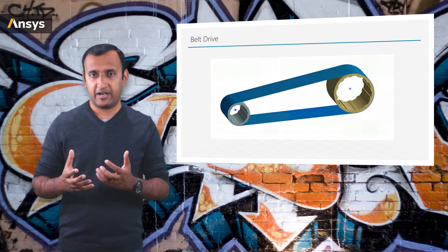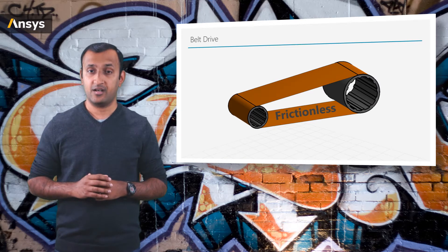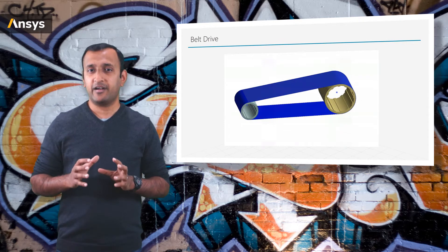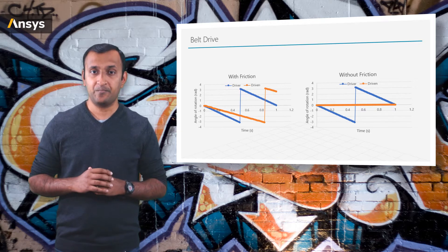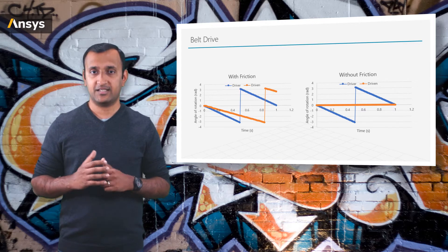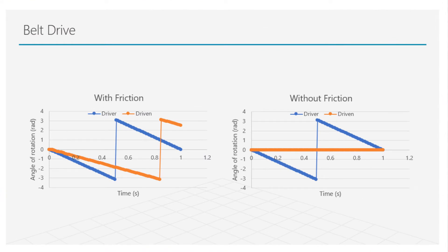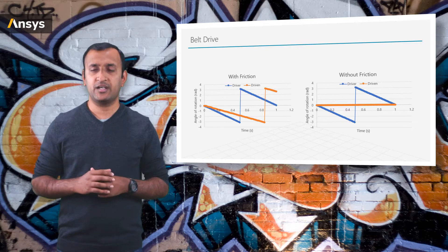Now, suppose we lubricate the shaft surfaces more than we should and end up with a nearly frictionless interaction between the shaft and the belt. If we start rotating the driver, the belt simply slips over the shaft and it never transmits power to the driven. We can observe this by plotting the angle of rotation of both the driver and the driven shaft in both cases as a function of time. In the case of friction, the driven shaft starts rotating over time, but in the case of frictionless contact, power is never transmitted and the angle of rotation of the driven does not change. This example shows why frictional force is important and how it can be used in designing mechanical systems.